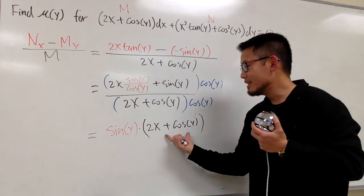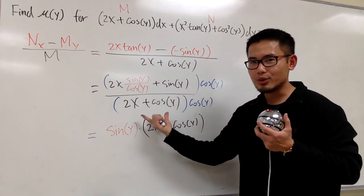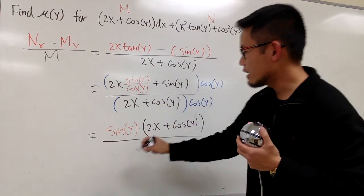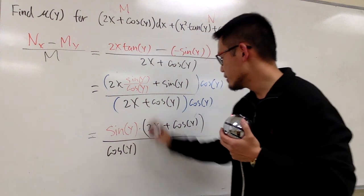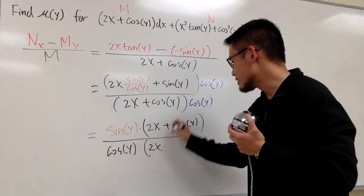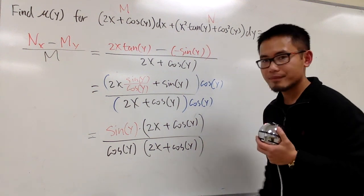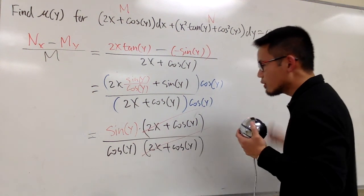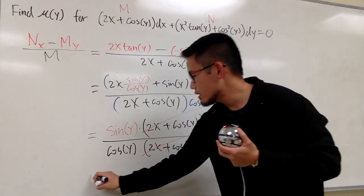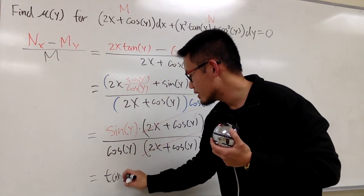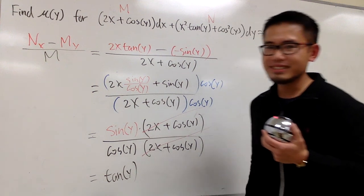And look at this. Actually matched the denominator already. So I'm not going to distribute it. I'm just going to rewrite it. Let's put the cosine of y in the front. And then put this down, 2x plus cosine of y. And of course this and that will cancel. And this is sine y over cosine y, which is just tangent of y.